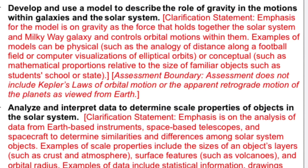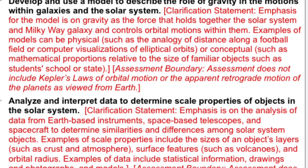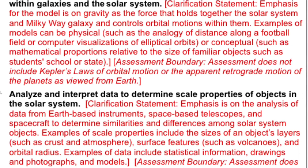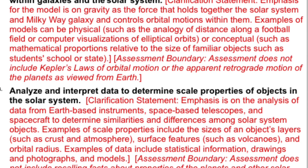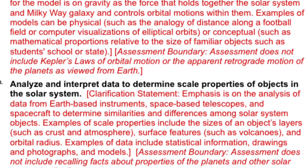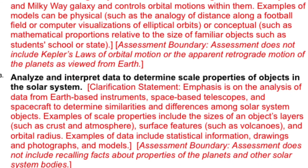I'm going to include links to the relevant next generation science standards, but I just want to read from them now. Students are expected to develop and use a model to describe the solar system. Examples can include physical, such as the analogy of the distance along a football field or computer visualizations of elliptical orbits, or conceptual, such as mathematical proportions relative to the size or familiarity of objects such as a student's school or state. We're also supposed to be able to analyze and interpret data to determine the scale and properties of objects in the solar system. Examples of data include statistical information, drawings, photographs, and models. We decided that the creation of these models and their use to calculate the distance of the various planets from the sun would be a perfect way to incorporate art into the science lesson.